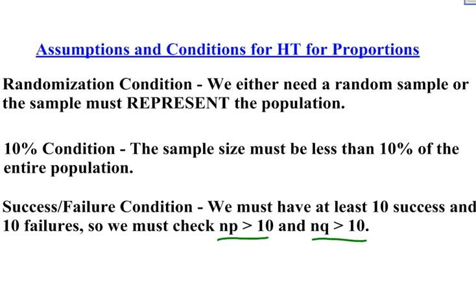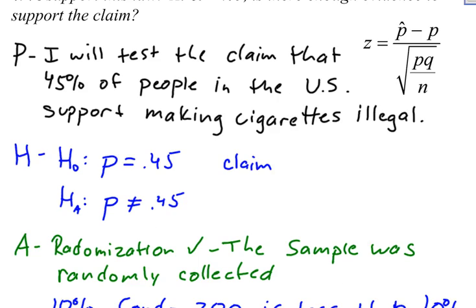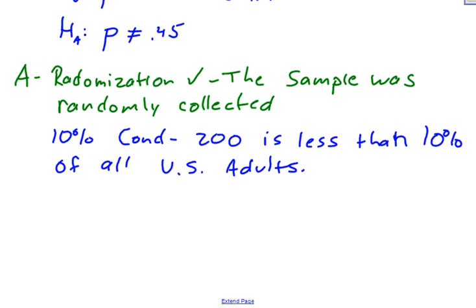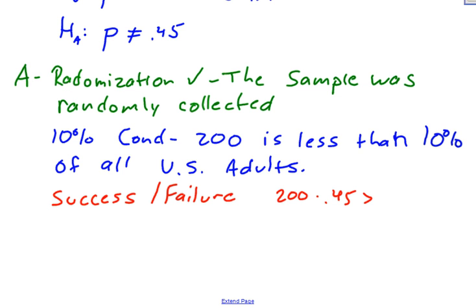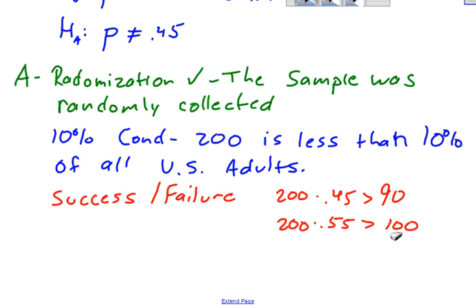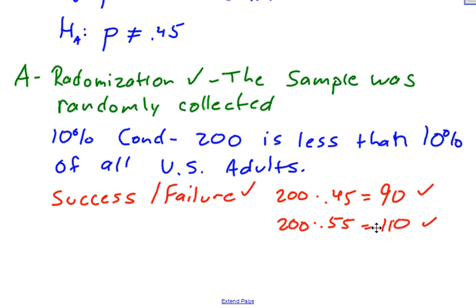We check n times p and n times q, making sure both are greater than 10. P is 0.45 from our null hypothesis. So: 200 times 0.45 equals 90, which is definitely greater than 10. And 200 times 0.55 equals 110, which is also definitely greater than 10. Since both of these are satisfied, the success-failure condition has been met.